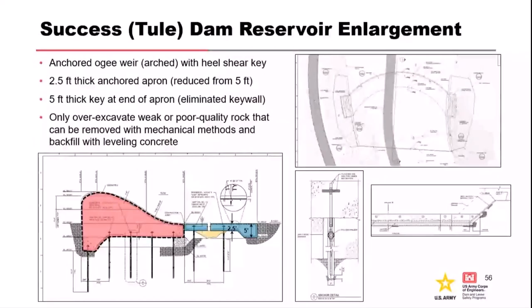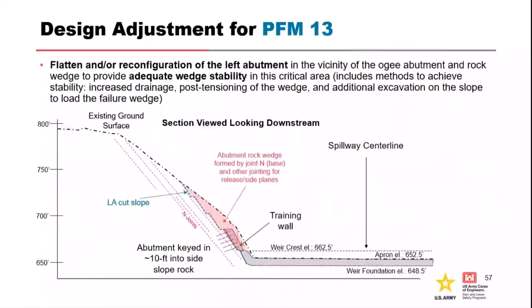At the end, the redesign kept the same weir structure, geometry, and arch geometry, but it's now anchored. We got rid of all the leveling concrete — don't take out 30,000 PSI rock and put in 3,000 PSI concrete. But you do need something to keep hydraulics and push the jump downstream, so we have only a 2.5-foot thick reinforced anchored mat with a small key wall at the end.